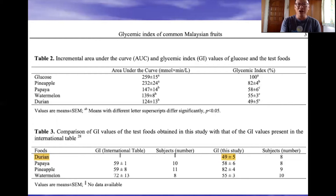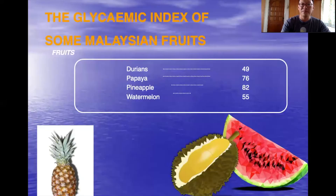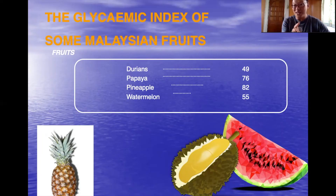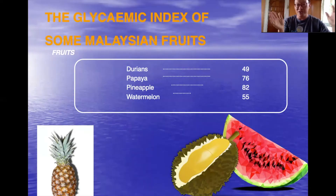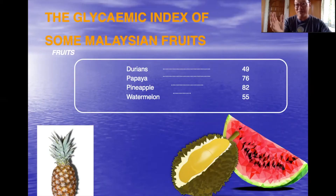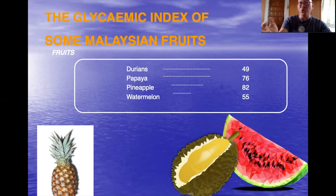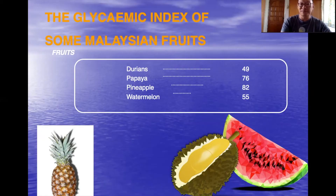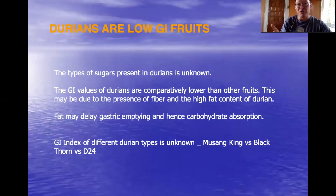In summary, the glycemic index of durian in this study was 49. Below 55 is considered low GI; 55 to 70 is intermediate; anything higher than 70 is high GI. Papaya scored 76 and pineapple 82, both high GI. Watermelon at 55 is borderline low to intermediate.